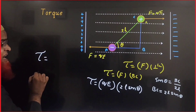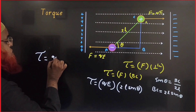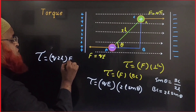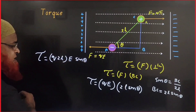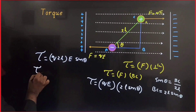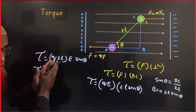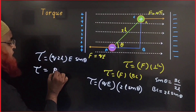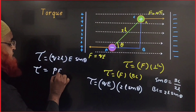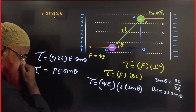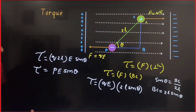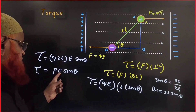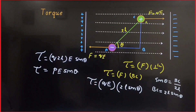Therefore torque τ can be written as Q into 2L into E into sine theta. Since Q into 2L is the electric dipole moment given by the letter small p, the torque becomes p times E times sine theta. So torque acting on an electric dipole is dipole moment into electric field into sine theta, where theta is the angle between them.